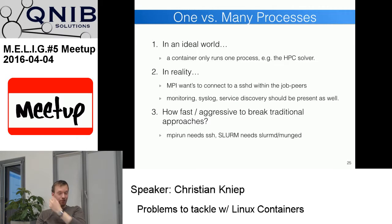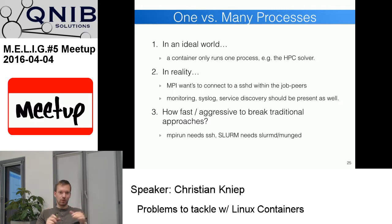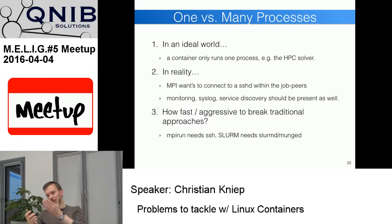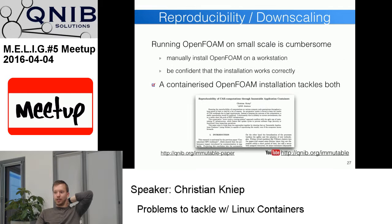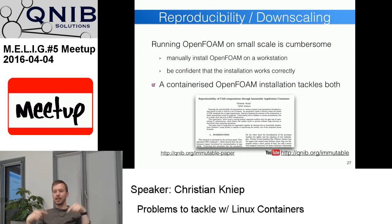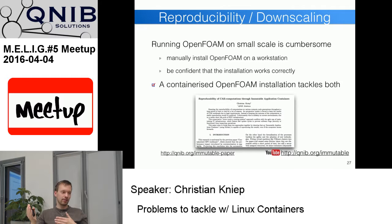Do we want one or many processes in a container? I personally have at least supervisord to start the service I want to run, plus maybe something else. The religion says only one process per container, so that if this process dies the container goes down and you start a new one. In reality it's different. I'm still using supervisord and consul inside the container, which isn't the pure approach, but ideally you'd have one process per container.